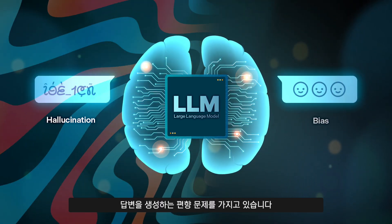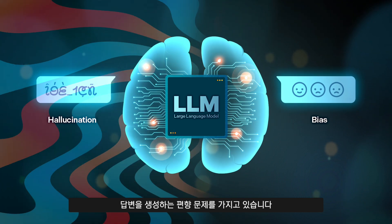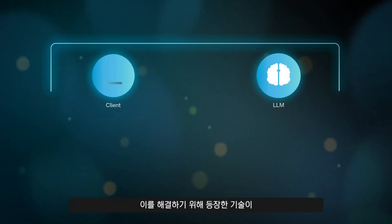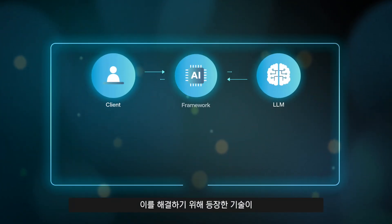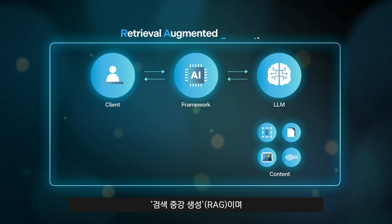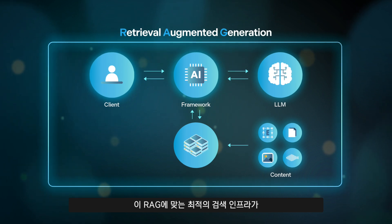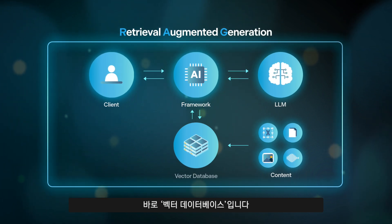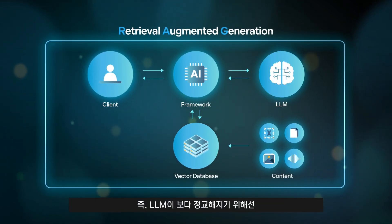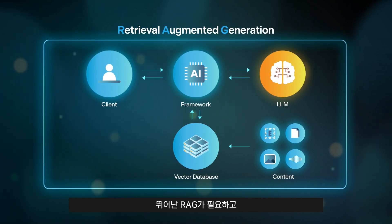The technology that helps address this is retrieval augmented generation, and the optimal infrastructure for RAG is a vector database. For LLMs to become more accurate, they need strong RAG systems, and for RAG systems to succeed, high-performance vector databases are essential.